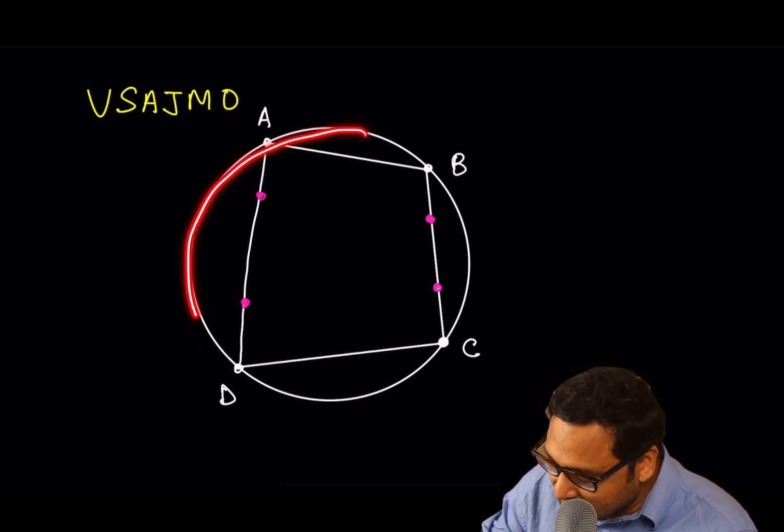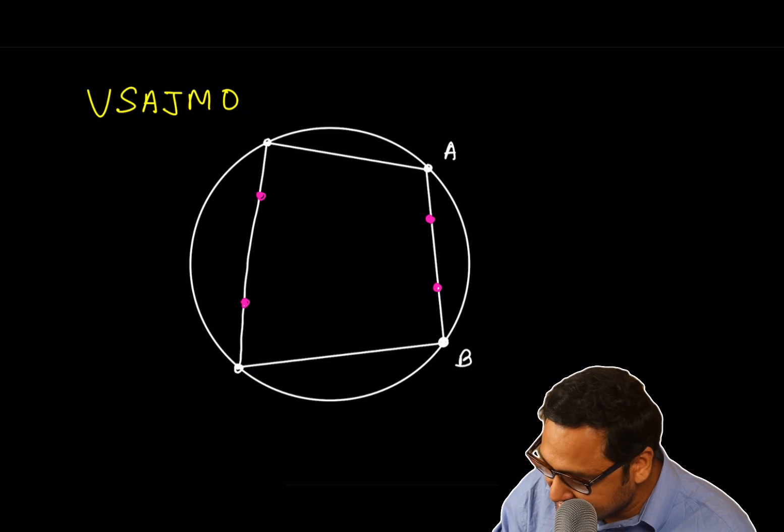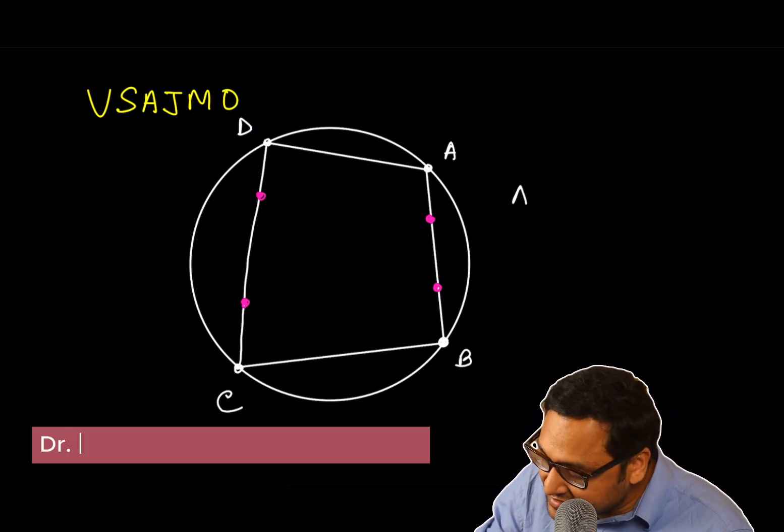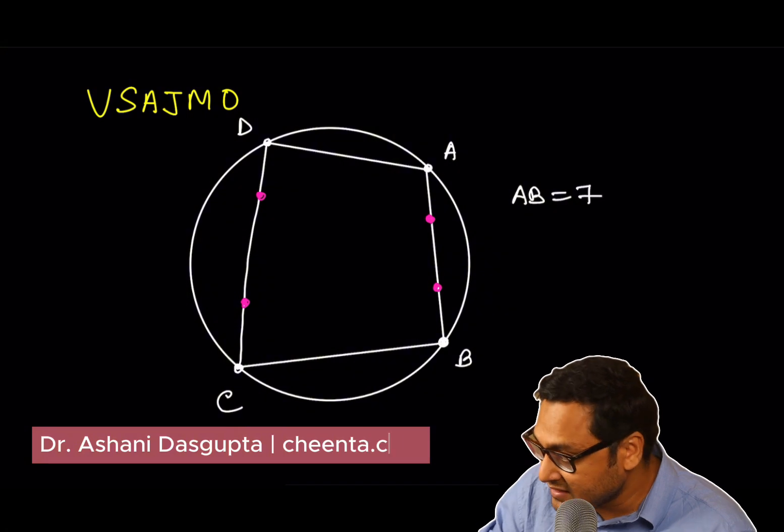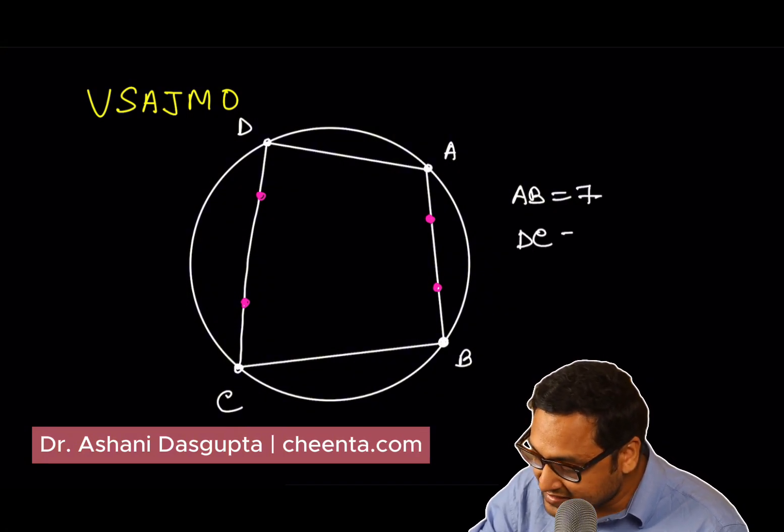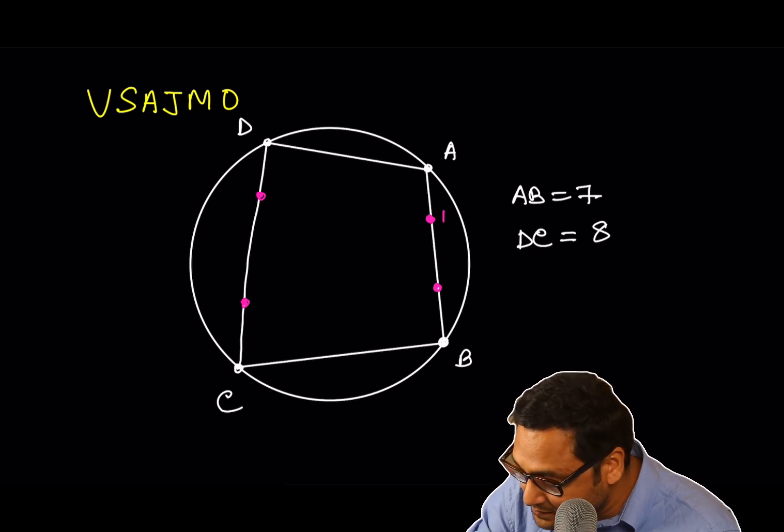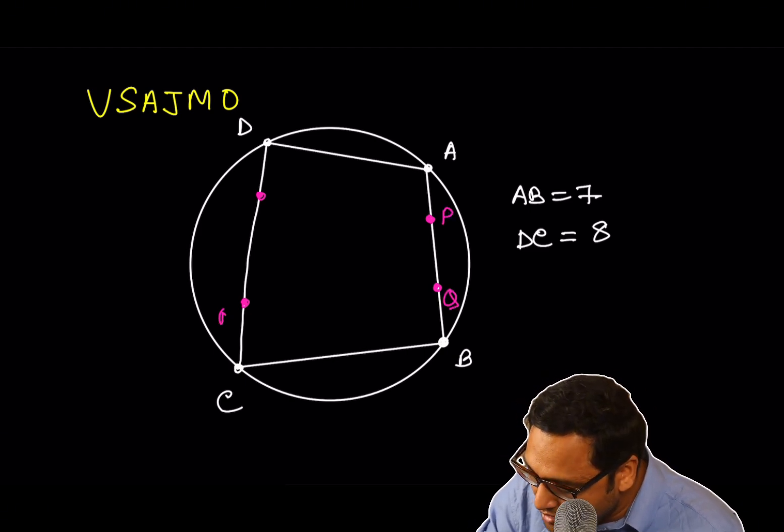And it involves a cyclic quadrilateral. So suppose you have a circle like this, ABCD. The length of AB is given to be 7. The length of DC is given to be 8. And we have 4 more points, P, Q, R, S.